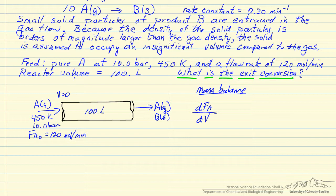Volume equals 0 when we start, volume equals 100 liter at the end. The change in number of moles with volume is the rate of reaction. In this case we have rate constant, and the rate constant indicates it's a first order reaction.